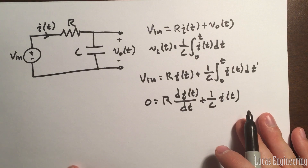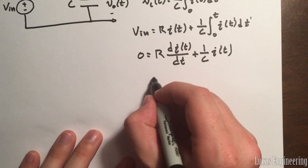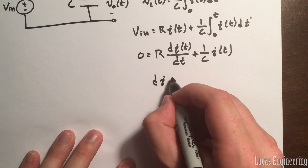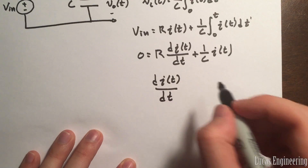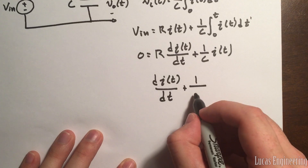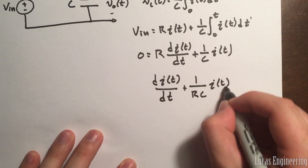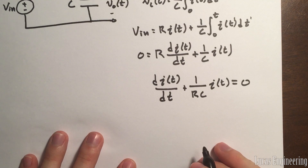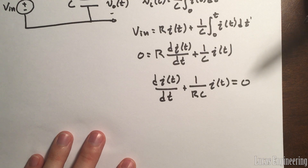To write this as a first-order linear differential equation, divide everything by R: dI/dt + (1/RC)·I(T) = 0. This is a linear first-order ODE.